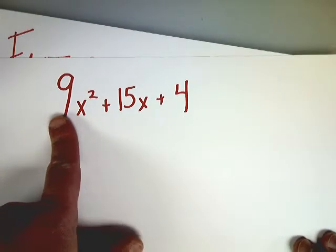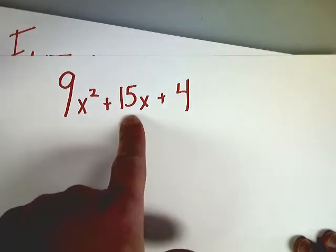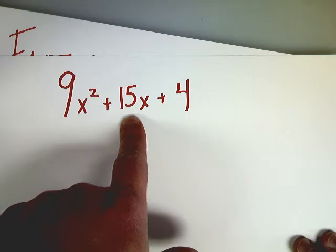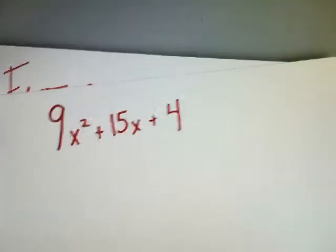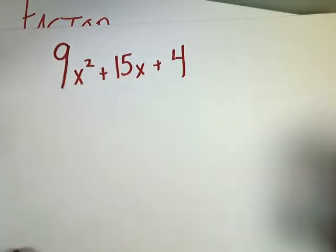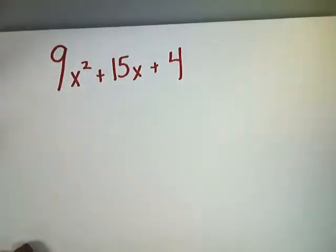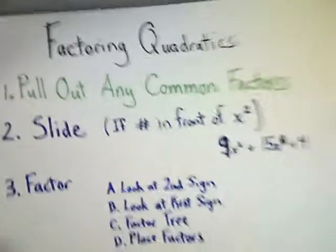So I'm going to look at my paper here. I know that three goes into nine and 15 also has three as a factor, but four, no. So this one's pretty good. It's as far down as it can go. I don't have to pull out any common factors.